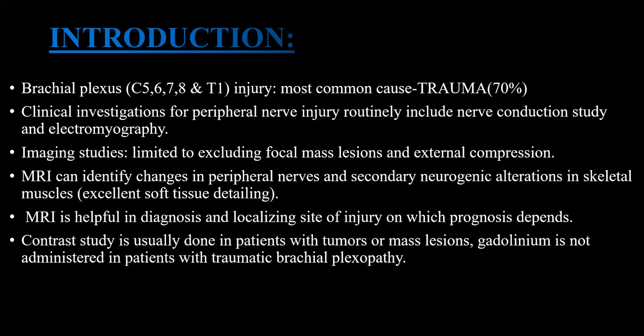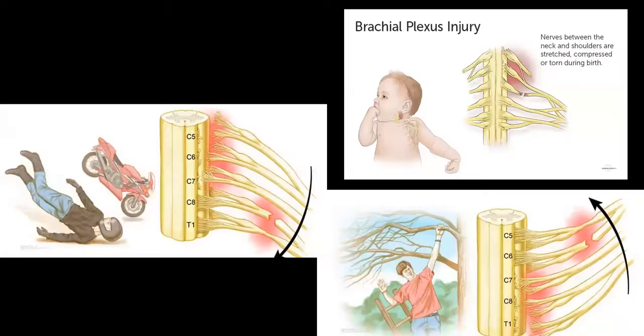The most common cause of brachial plexus injury is trauma. Clinical investigation for peripheral nerve injury routinely includes nerve conduction study and electromyography, and imaging study is limited to detecting focal mass lesion and external compression. MRI identifies changes in the peripheral nerve and secondary neurogenic alteration in the skeletal muscle. MRI is also helpful in diagnosing and localizing the site of injury, on which the prognosis depends. Contrast study is usually done in patients with tumor or mass lesion; gadolinium is not administered in patients with traumatic brachial plexopathy.